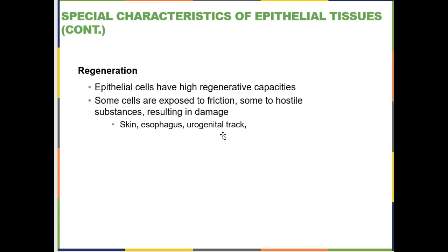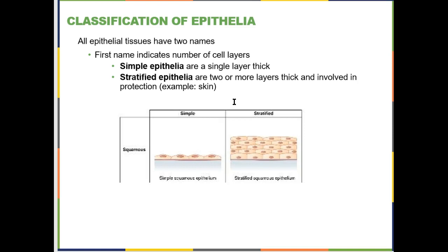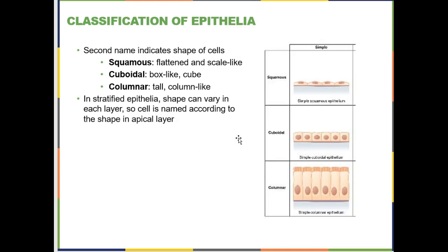Your epithelia are easily regenerated — they all have this capacity because they are all lining surfaces. Surfaces tend to take damage or friction, so you're always going to be losing epithelial cells that then have to be replaced. There is generally speaking a two-word classification system for epithelial cells.